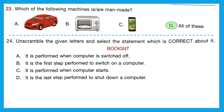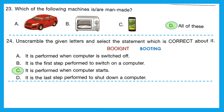Question 24: unscramble the given letters and select the correct statement about it. The unscrambled word is BOOTING. Booting is the process of starting a computer via hardware or software — loading an operating system into the computer's main memory. Option C — it is performed when the computer starts — is the correct answer.